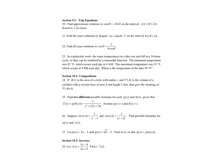For number 20, we want to find approximate solutions to cosine of theta equal to negative 0.43 on the interval negative 2π to 2π. If we start with our equation, we need to get rid of the cosine on the left-hand side so we can get theta by itself. Because when it says approximate solutions, it means solve for theta. So we'll take cosine inverse of both sides.